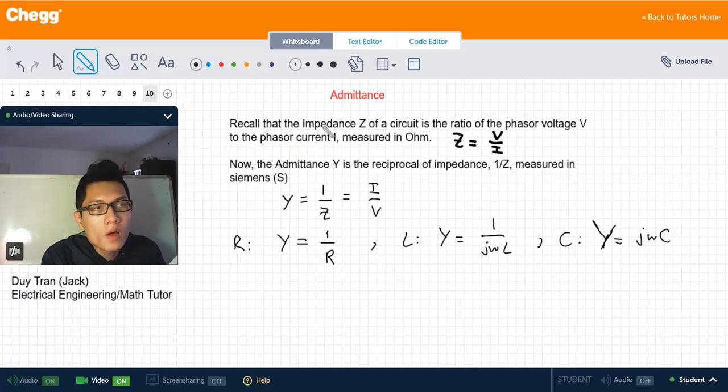Recall from the previous video that the impedance Z of a circuit is the ratio of the phasor voltage V to the phasor current I, measured in ohms. So Z equals V over I.